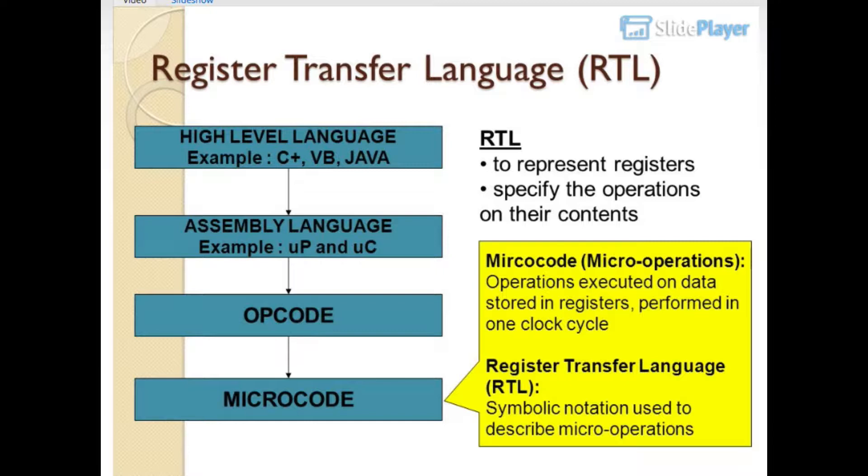High level languages like C++, VB, and Java compile to assembly language, which uses opcodes and microcode. RTL is used to represent registers and specify operations on their contents.